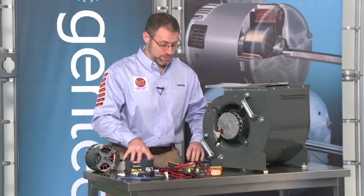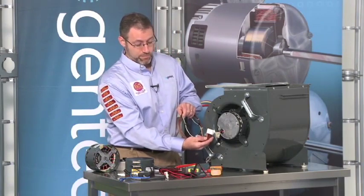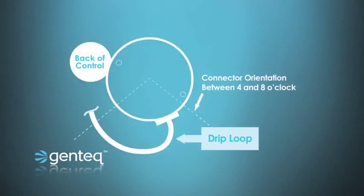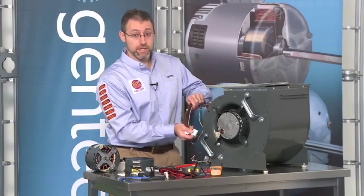For the same reason, we want to make a drip loop out of our harness that goes to the motor. After we've plugged the connectors into the motor, we want to make a drip loop. So if any water got on these wires, it would also run off and drop off the wires before it could get all the way into the motor.